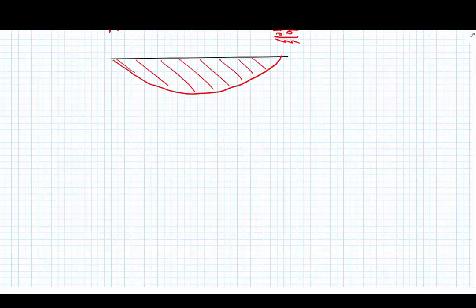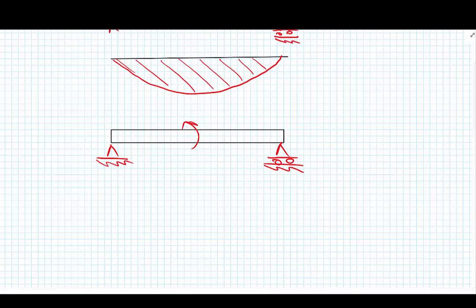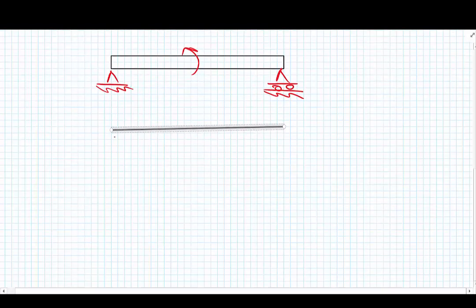And then we have the loading case when we have a moment somewhere along the beam. Let's draw the beam. Again, simple supports. And a moment somewhere along the beam. And this gave us the bending moment diagram. Again, it was a linear function.